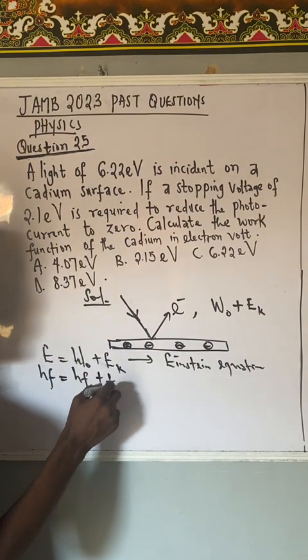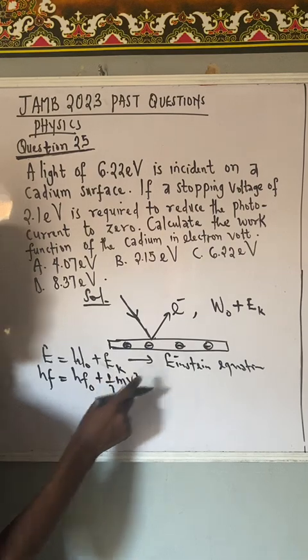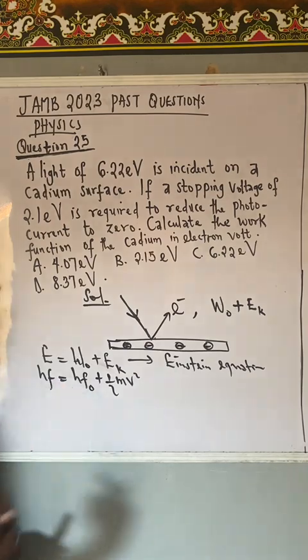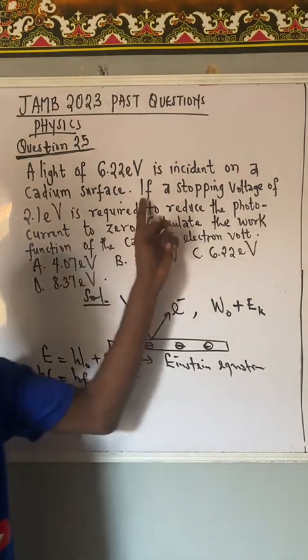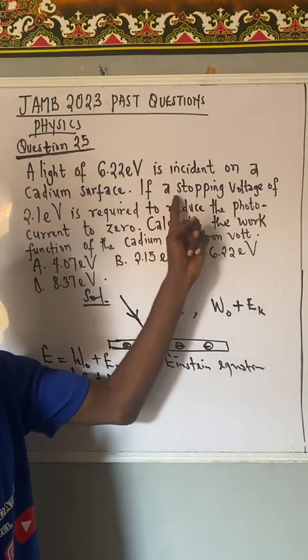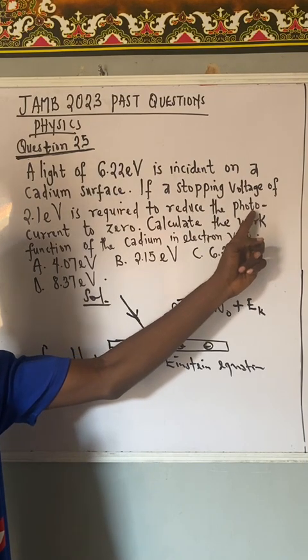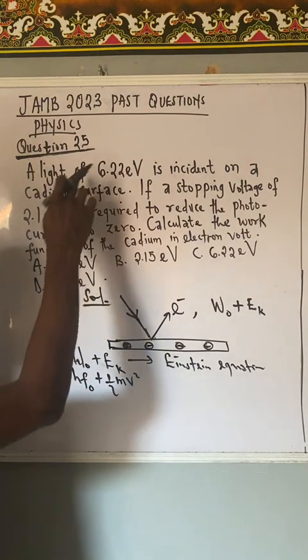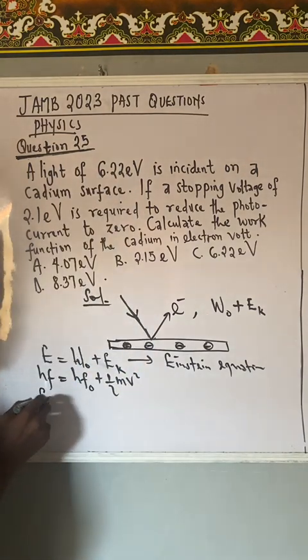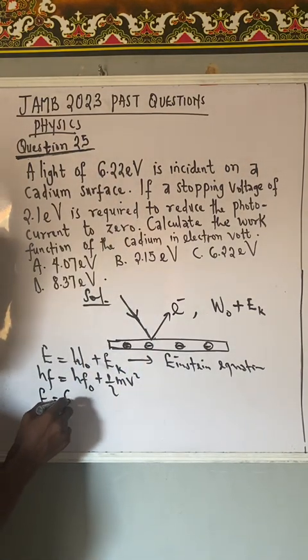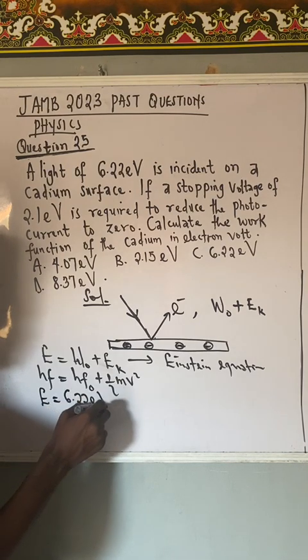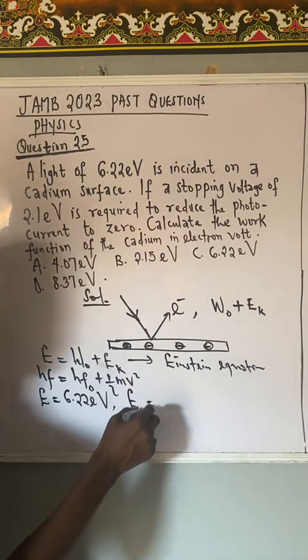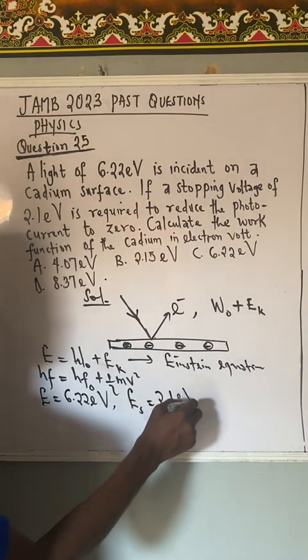EK is half MV squared, which is kinetic energy. But I may not need this second formula. If we continue the question, they said the stopping voltage is 2.1 electron volts. They gave us the total energy E as 6.22 electron volts, and the stopping voltage ES as 2.1 electron volts.